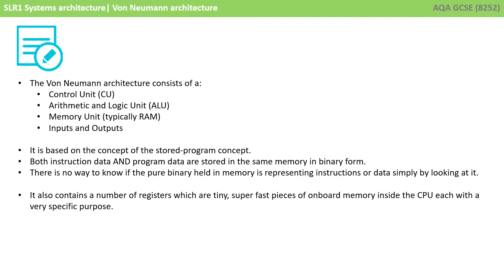To recap: the von Neumann architecture consists of a control unit, an arithmetic and logic unit, memory units, and inputs and outputs. It's based on the stored program concept — both instructions and program data are stored in the same memory in binary form. There is no way to know if the pure binary held in memory is representing instructions or data simply by looking at it. The von Neumann architecture also contains a number of registers, which are tiny super-fast pieces of onboard memory inside the CPU, each with a very specific purpose.